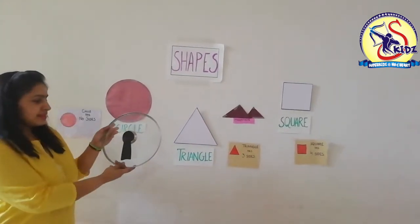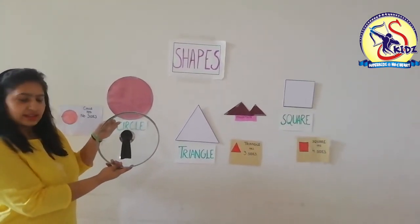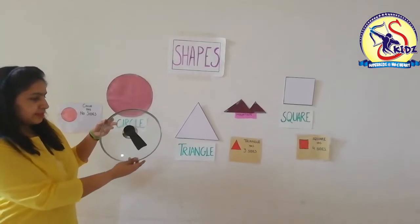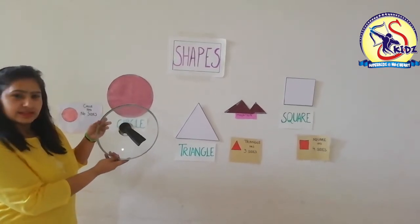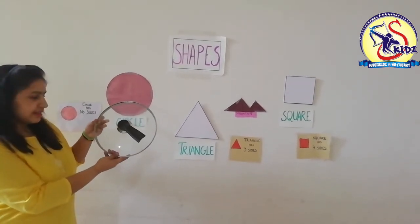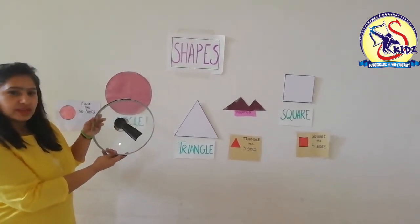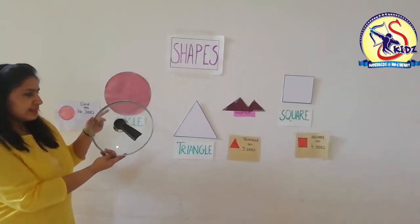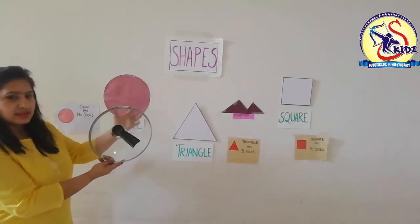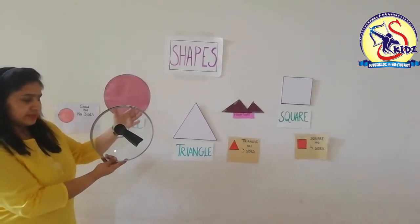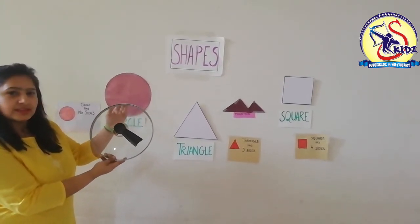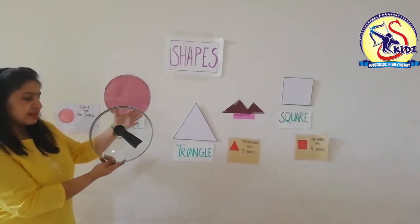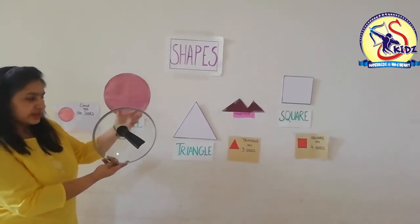What is this? This is a lid. What is the shape of this lid? It is circle in shape. The lid is circular in shape.